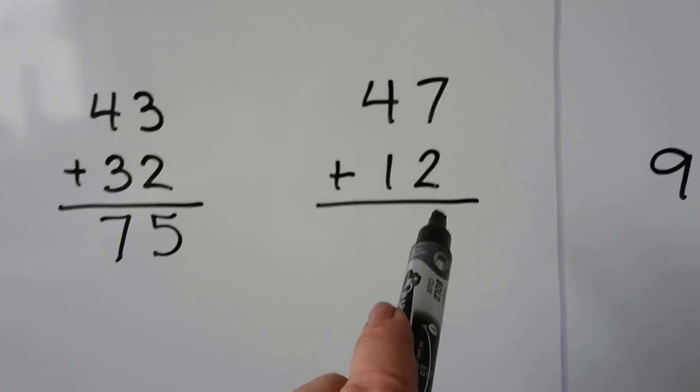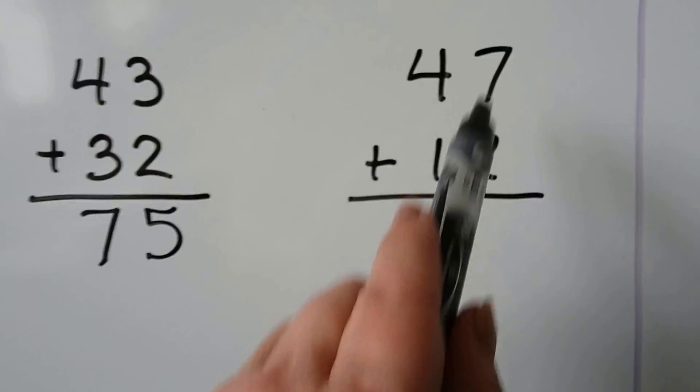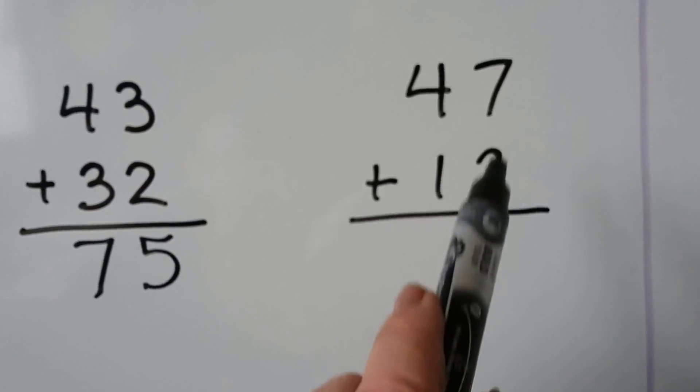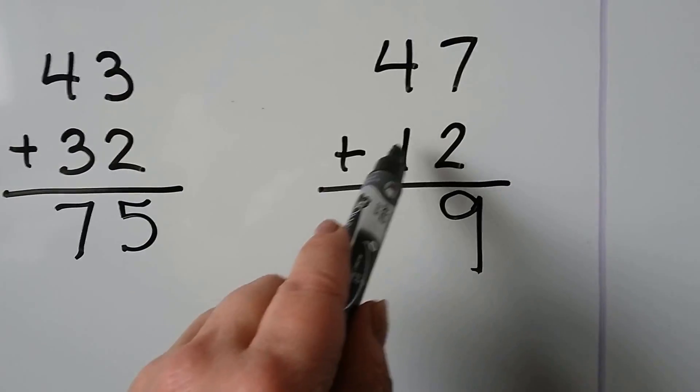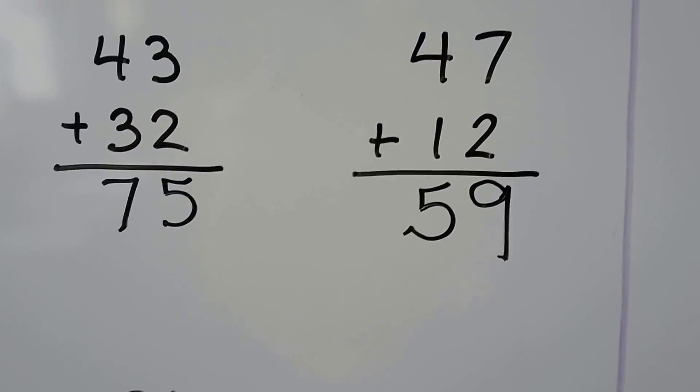We add, starting with the 1s. It's an addition problem, so we're adding. 7 and 2 more is 7, 8, 9. 4 and 1 more is a 5. In the 10s place, we have 59.